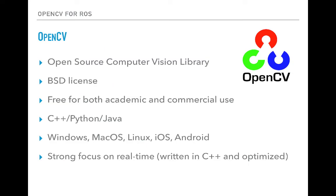The objective of this lecture is to give an overview about OpenCV and its important features. OpenCV is an open source computer vision library. It was released under the BSD license, and it is free for both academic and commercial use. It supports multiple programming languages, namely C++, Python, and Java, and works under different operating systems, including Windows, Mac OS, Linux, iOS, and Android. It has a strong focus on real time, since it was written in C++ and has been optimized.